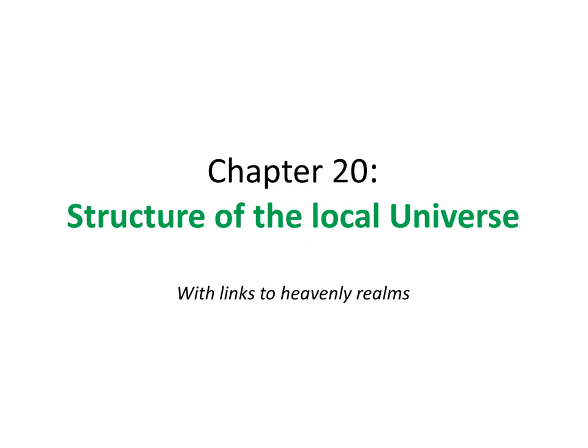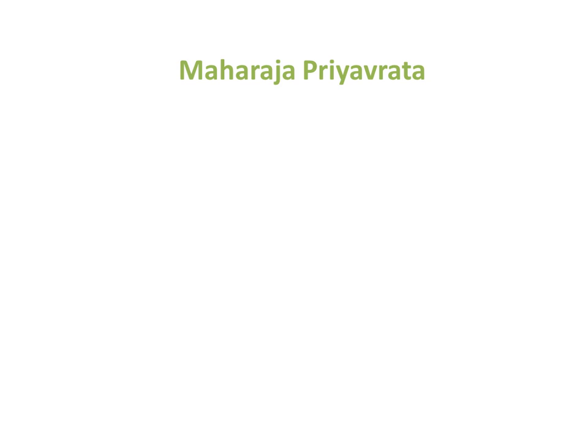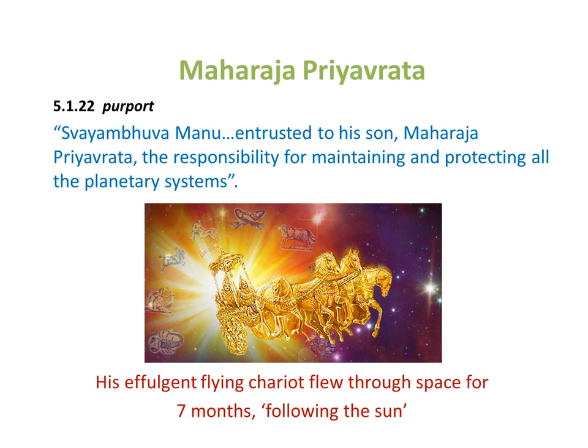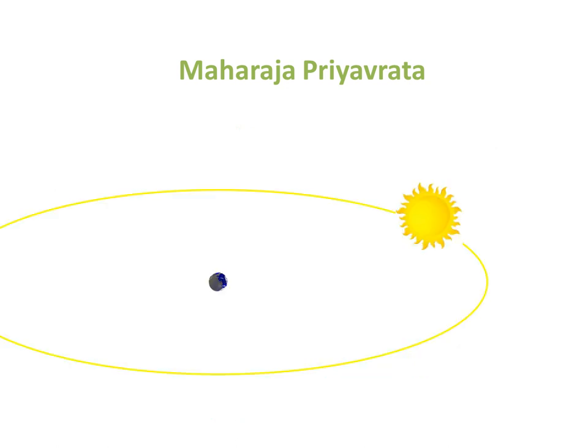Chapter 20: Structure of the Universe, with links to Heavenly Realms. An important character that appears throughout the fifth canto is Maharaj Priyavata. Svambuva Manu entrusted to his son, Maharaj Priyavata, the responsibility for maintaining and protecting all the planetary systems. His effulgent flying chariot flew through space for seven months, following the sun. How can we picture this? Perhaps something like this.